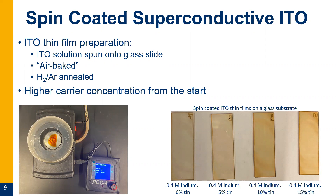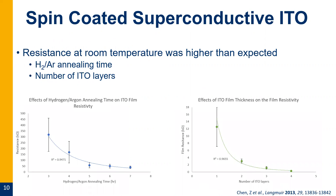We based our process on 2013 work from Chen and co-workers, who did hydrogen-argon annealing for three hours. After doing that, I found my films had resistance in the hundreds of kilohms — much higher than expected. So I let them sit longer, pulling them out every hour to check resistance. Around five hours, there was a huge drop-off in resistance. Also, annealing for longer makes resistance more consistent between samples. Now we do a 16-hour overnight anneal every time.